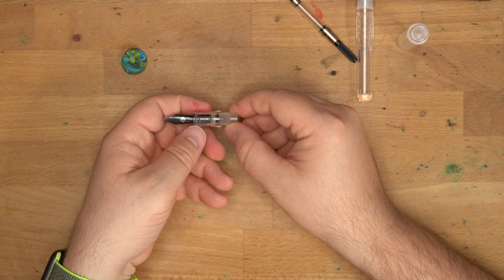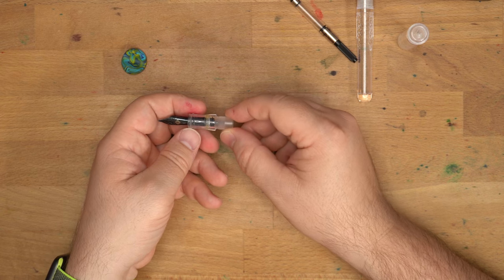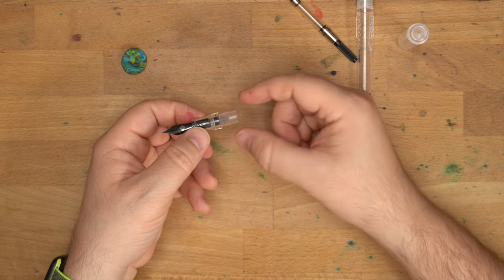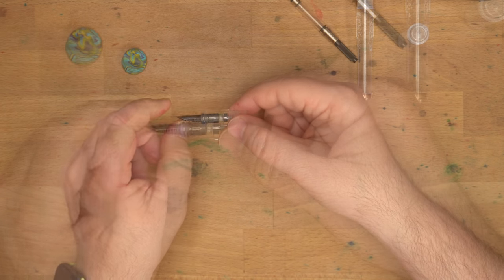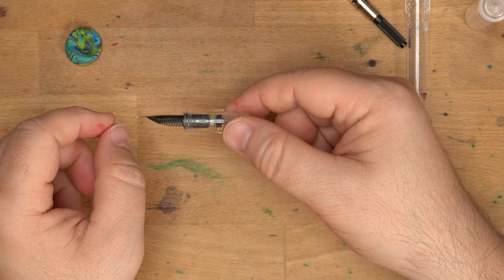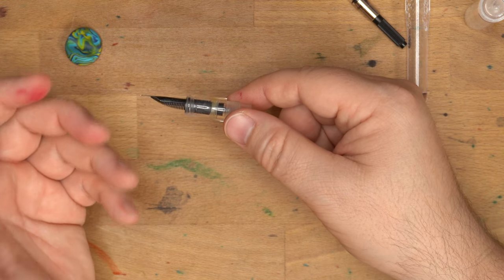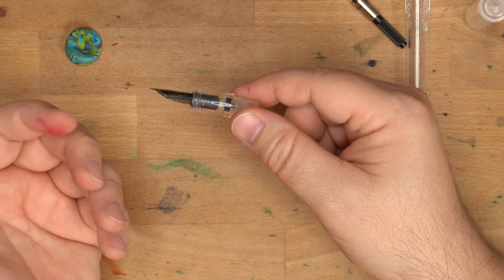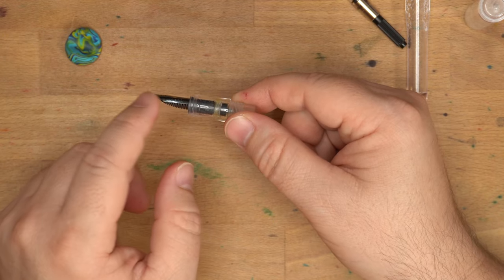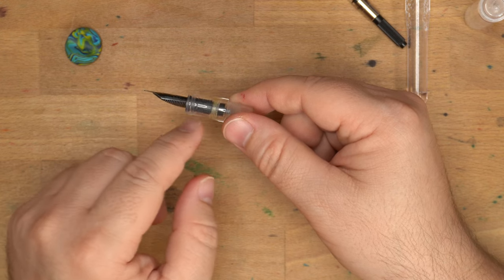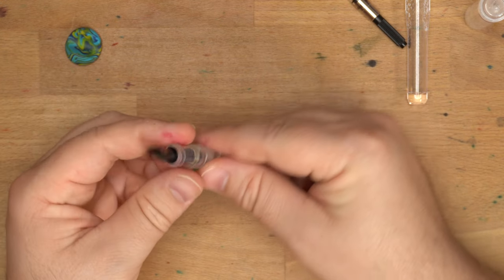Now, we have here the grip section of the pen, and here we have the section, these are the threads of the section, and then here we have the nib and the feed. Now, let's take this apart. This is a part that you don't need to do, but I want to show you how it works. This has what is called a nib unit, which means we have the nib and the feed inside another piece that is then screwed into the section.